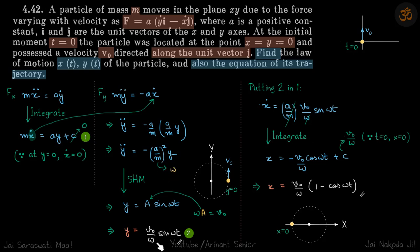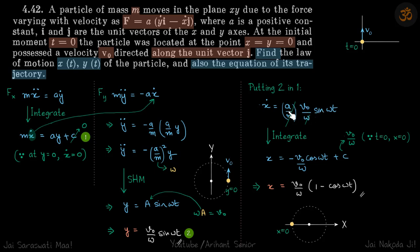Now substituting y into the first equation: ẋ = (a/m)·y = (a/m)·(v₀/ω)·sin(ωt). Since a/m = ω, this simplifies to ẋ = v₀·sin(ωt).